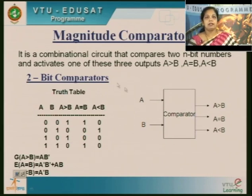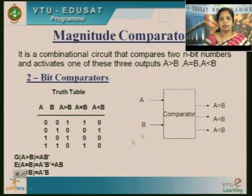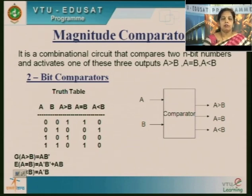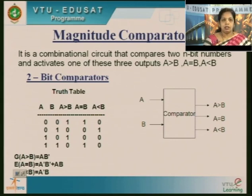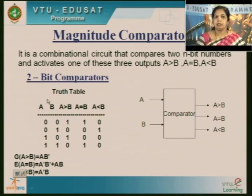Let us discuss comparators. A comparator compares two bits — whether the two bits are equal, greater than, or less than. It can be a 2-bit comparator if comparing two bits, or a 4-bit comparator if comparing four bits. A comparator is a combinational circuit that compares two n-bit numbers and activates one of three outputs: A greater than B, A equal to B, or A less than B. So we have three outputs: greater than, equal, or less than. Let us take an example: a 2-bit comparator.